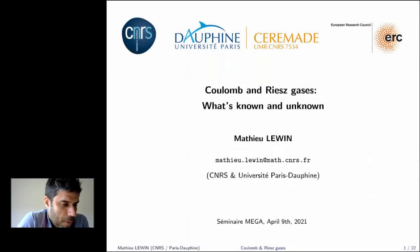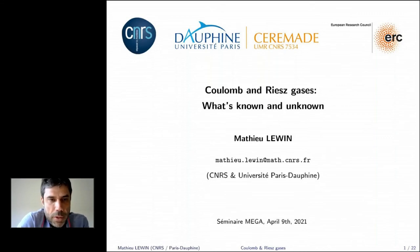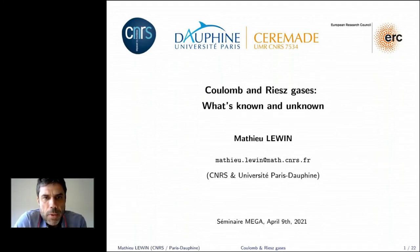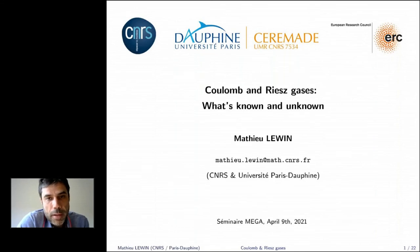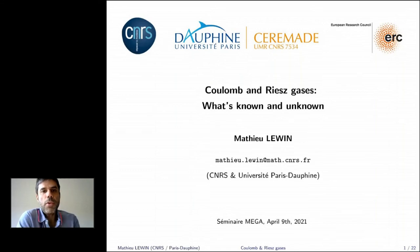I'm going to talk about Coulomb and Riesz gases — actually the name may not be entirely accurate because they are not always gases, but that's the usual name given to these systems. I'll discuss what's known and unknown from the point of view of statistical mechanics — more specifically, what I know and don't know. I'll explain what I think must be true, what has been proved, and what has not yet been proved.